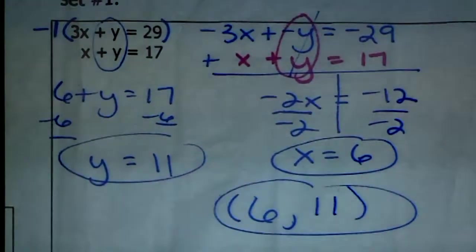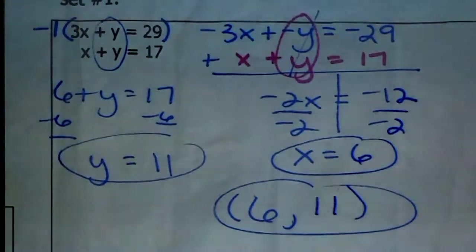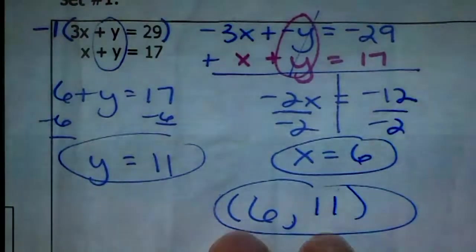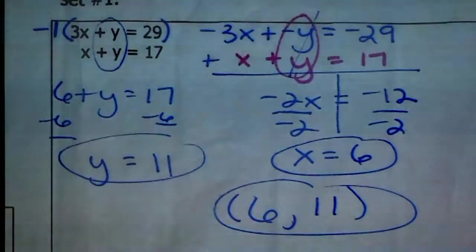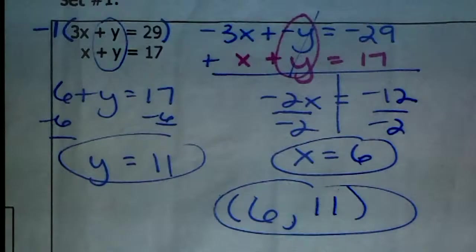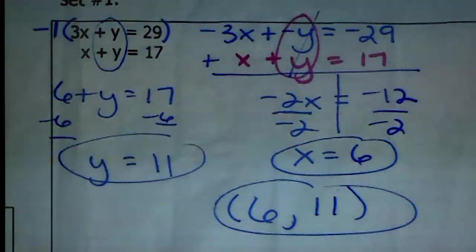The solution goes X, Y, so it's the point 6, 11. To make sure you're right, take the 6 and the 11, plug them in for X and Y into both equations — not just one — to make sure it works out.